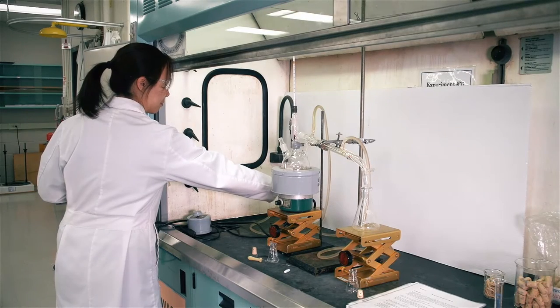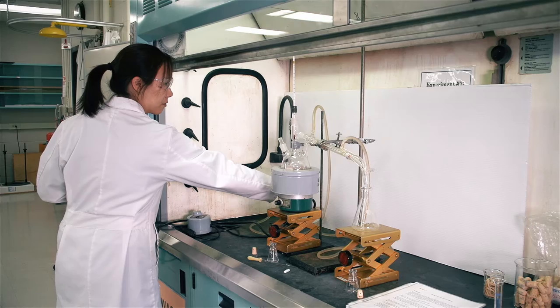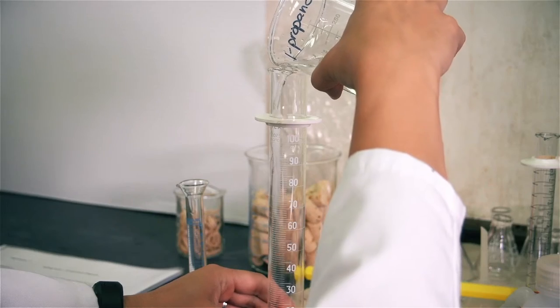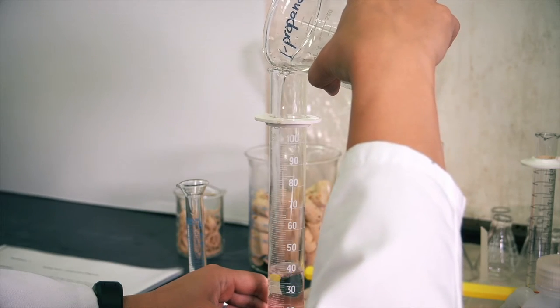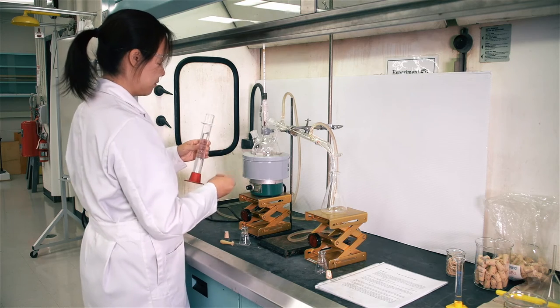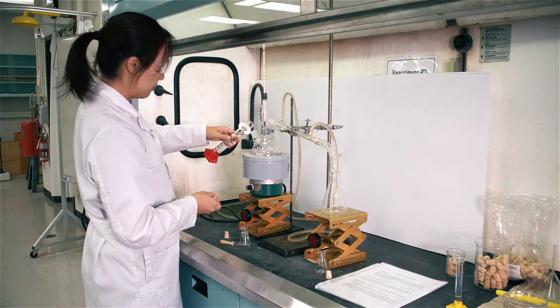The first step is to set up the apparatus as shown. Turn on the condenser water. Place approximately 95 ml of propan-1-ol and a stirring bar into the three-neck boiling flask. Make sure all the joints in the glassware are closed.